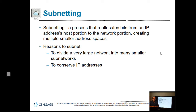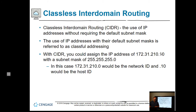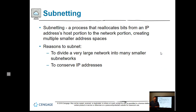Subnetting is the process of reallocating bits from an IP address's host portion to the network portion. On the left side of an IP address — say 172.31.210 — that's the network side, meaning any other computer that needs to communicate with you must also be on 172.31.210. In order to talk to each other, you have to have the same subnet, but you cannot all have the same host IP — each device must have a different address on the host side. Subnets divide very large networks into smaller subnetworks, conserving IP addresses.